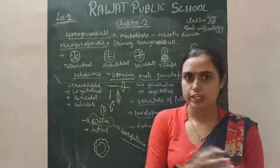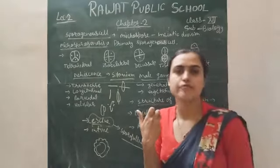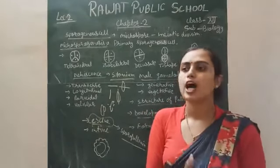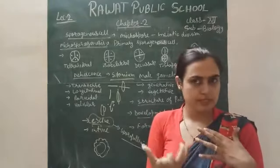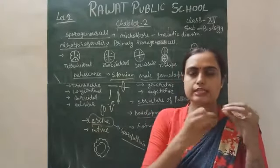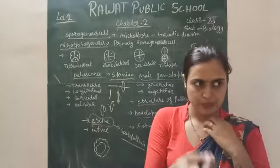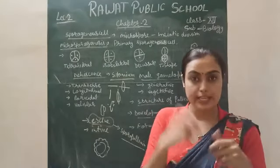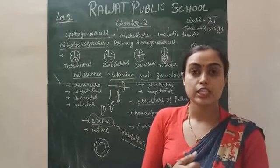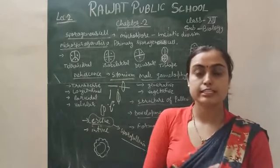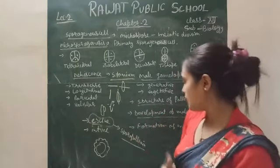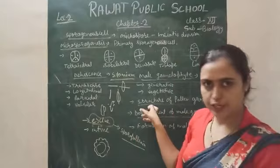One important thing is the pollen kit, which we discussed yesterday. It is formed by the Ubisch bodies and attracts insects because of its smell, making the pollen grain sticky. So it can easily attach to insects during cross-pollination and also stick to the stigma of the female gametophyte.